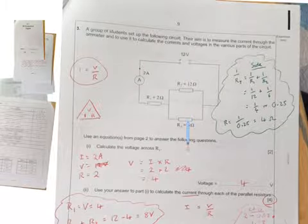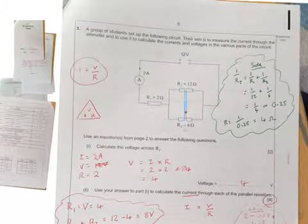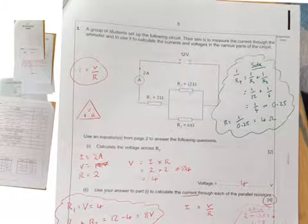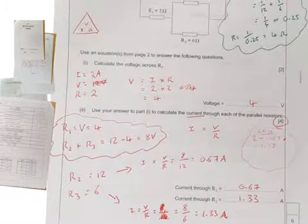What do we know about voltage in a parallel circuit? Voltage stays the same, so there's going to be 8 volts going across each bit here. So 8 plus 4 is going to give me that 12 there. I'm going to need that for the next question.